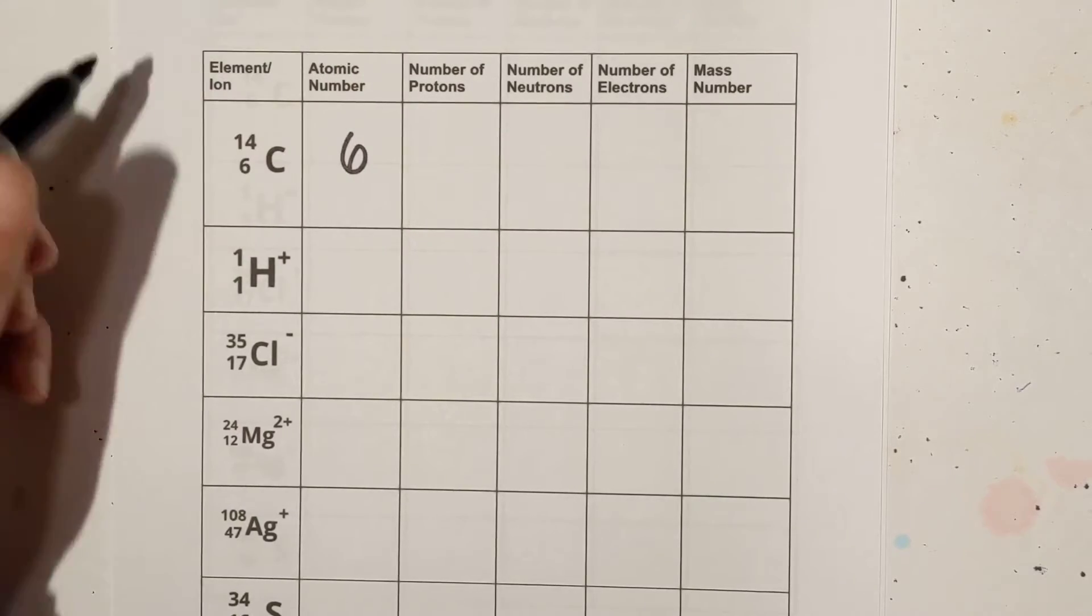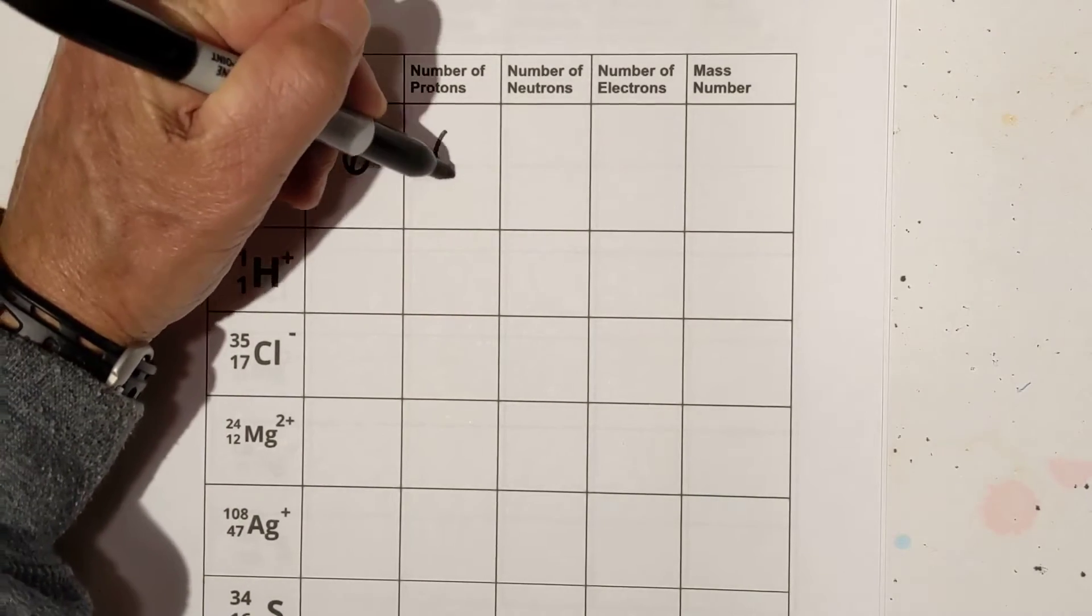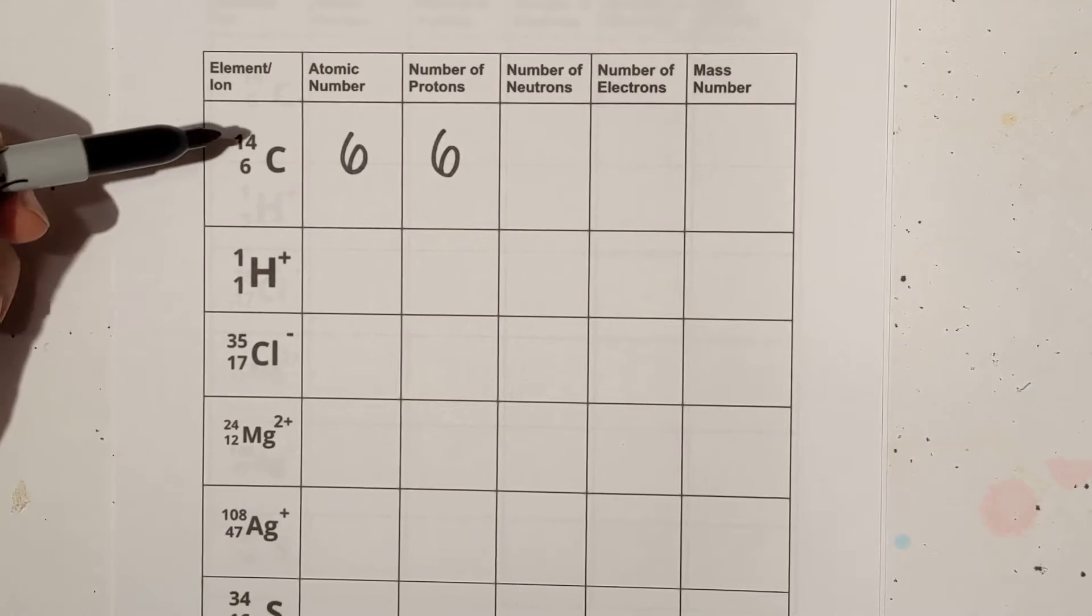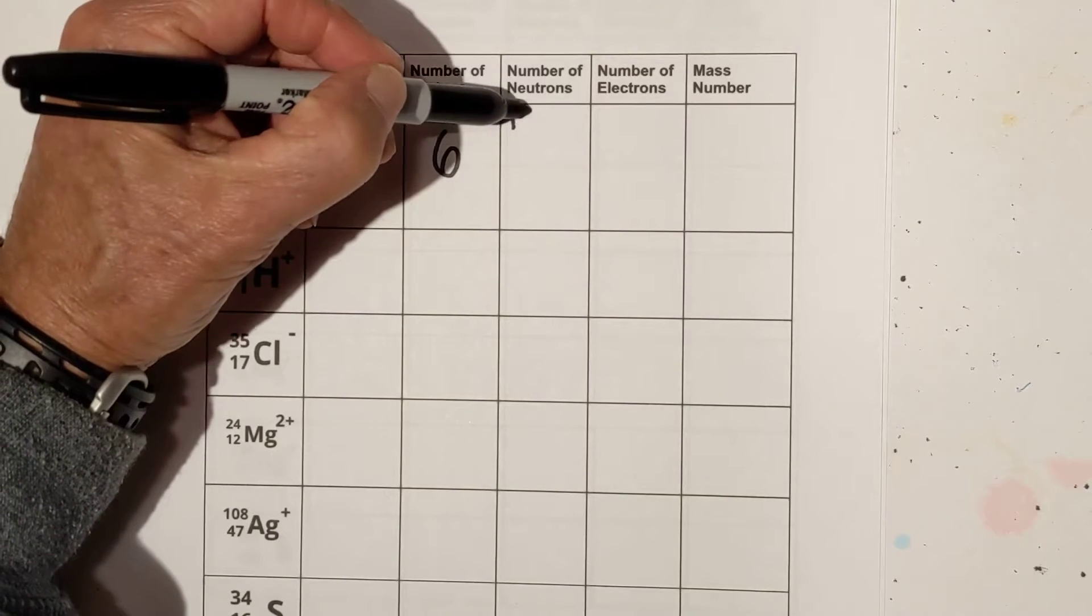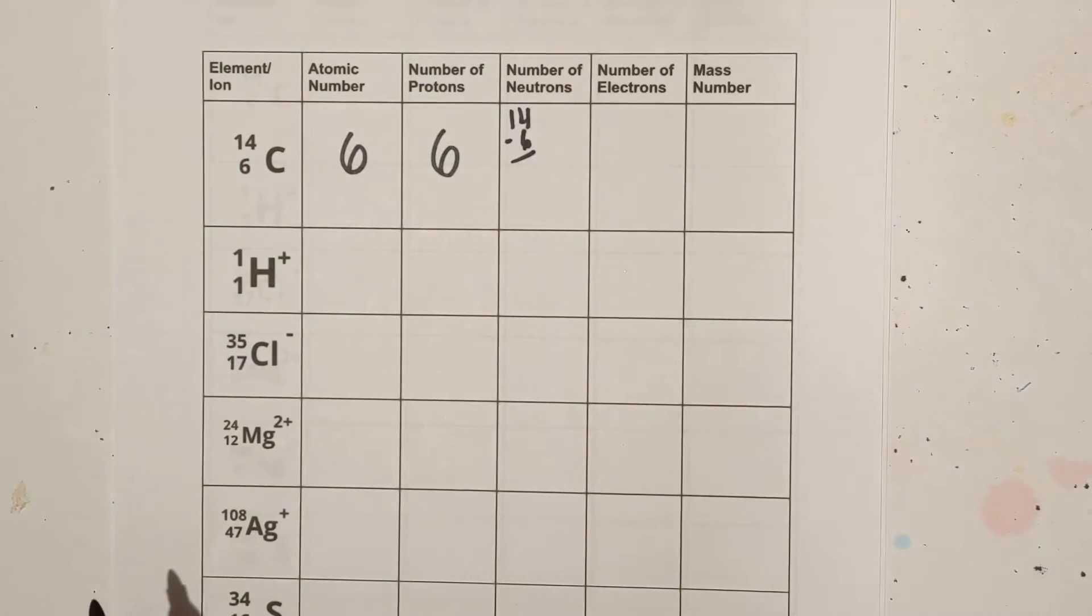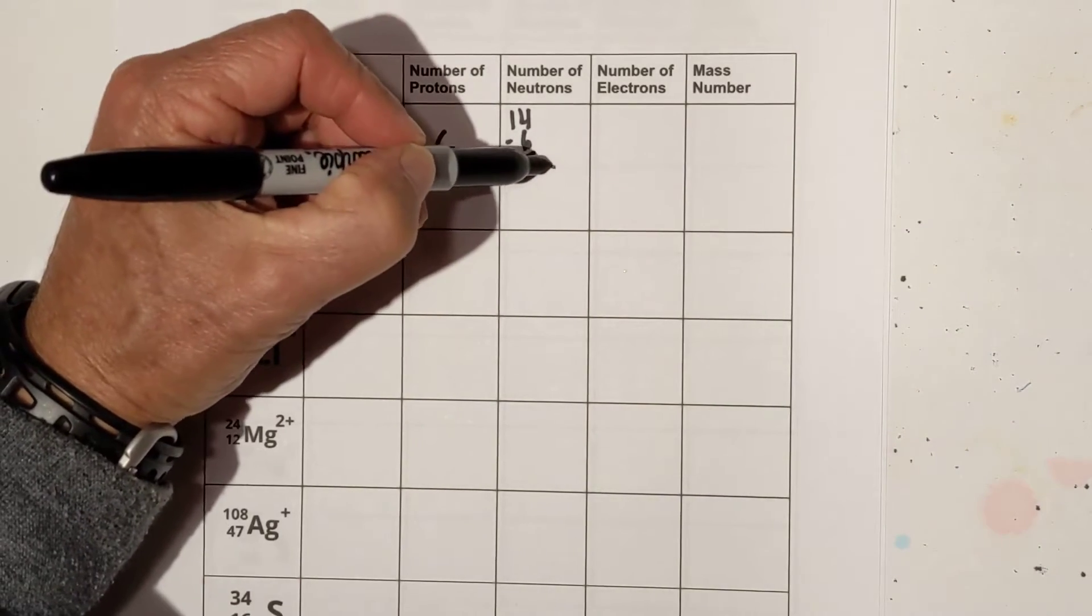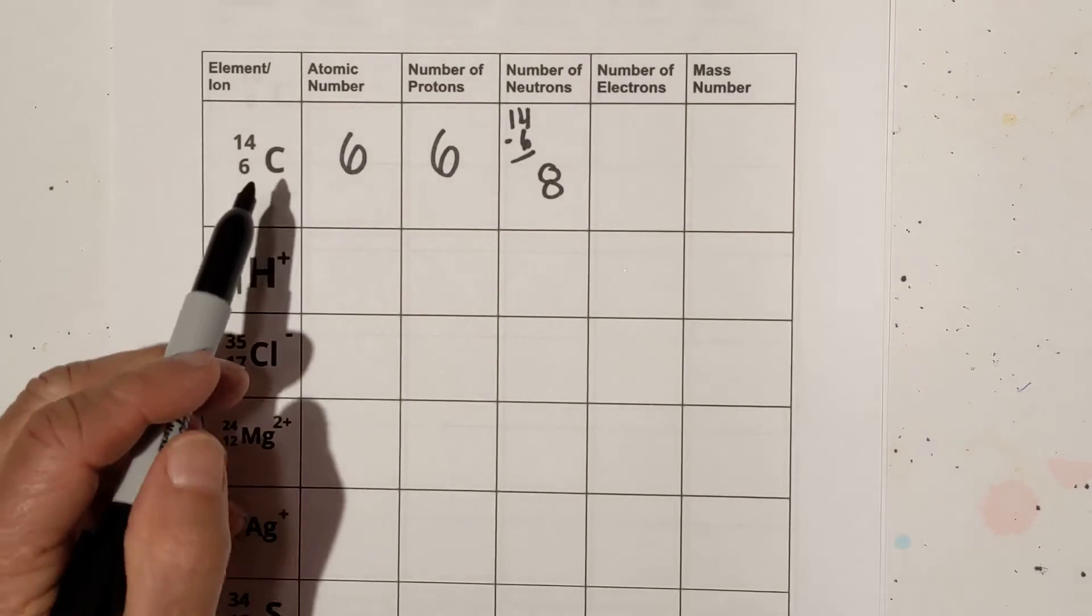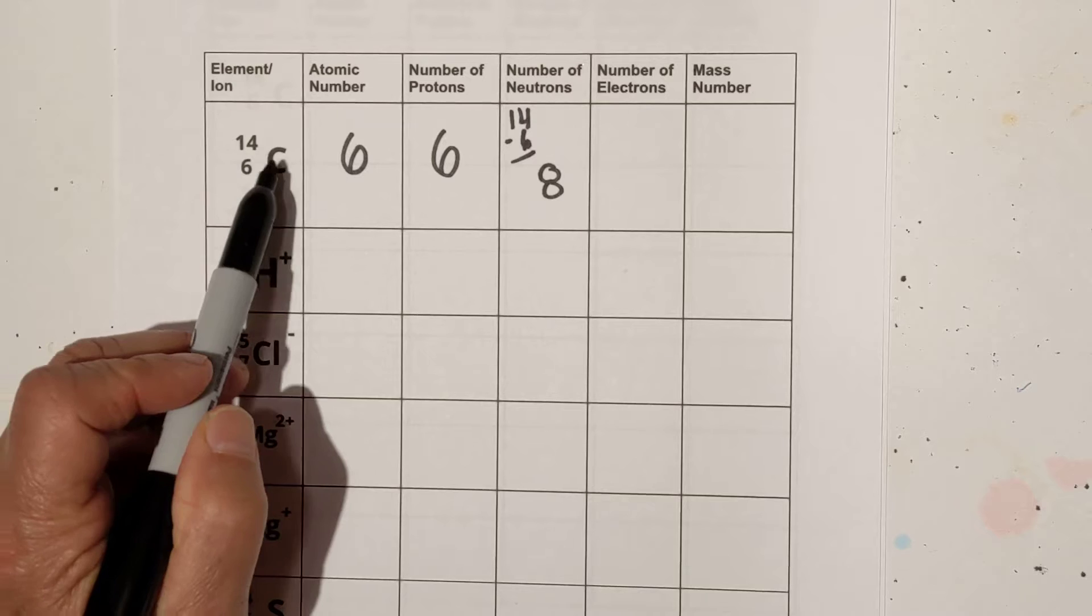The atomic number obviously is six, and it always tells you the number of protons. Now to find the number of neutrons, we will take the mass number of 14 and subtract the atomic number, and 14 minus six is eight. Now for the number of electrons, there is not a plus or minus, so it's not an ion, so it is neutral.